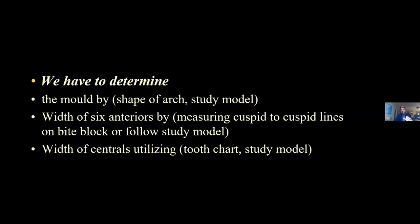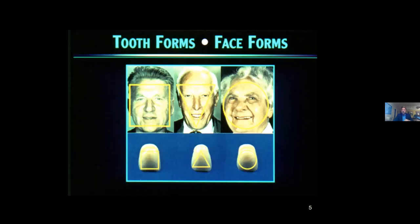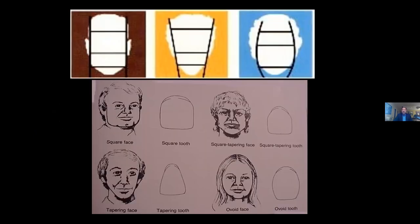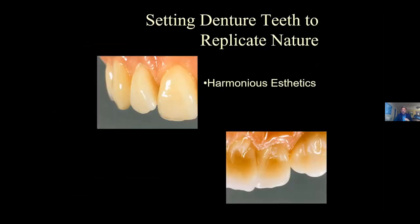We have to determine the mold by looking at the shape of the arch and sometimes getting a study model of the existing denture. We look at the width of the six anteriors — many times when you give us the cuspid line on the occlusal rim, we measure cuspid-to-cuspid, reference the tooth manufacturer's tooth chart, and determine what size tooth to use, with corresponding suggestions for posterior teeth. Concerns include the width of the six anteriors, the shape of the centrals, and shade. Tooth form equals facial form: square face, square tooth. We want a harmonious, natural-looking aesthetic setup.